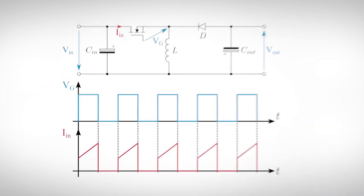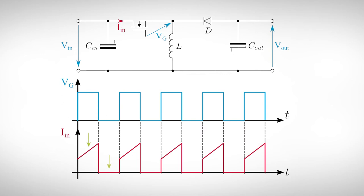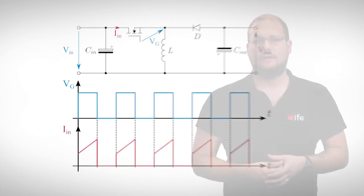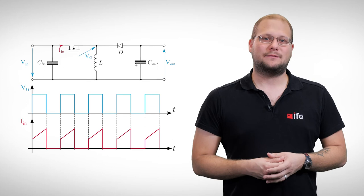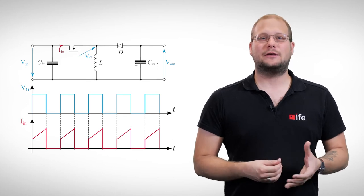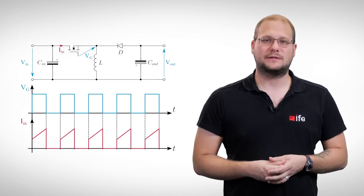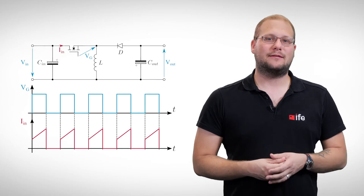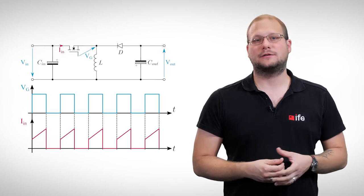The input current of the circuit is discontinuous. That means high current during the on time and basically no current during off time. As mentioned in the video about step-down converters, this is a big issue with electromagnetic emissions. We will talk a little bit later about PFCs to cover this problem.